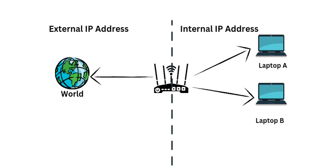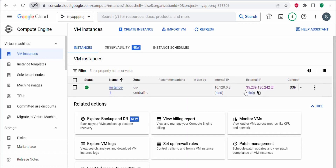To sum up, the main difference between internal and external IP addresses is that internal IP addresses are used for communication within the VPC network, while external IP addresses are used for communication with resources outside the VPC network. Internal IP addresses are not visible on the internet, while external IP addresses are visible. Whenever you stop a VM instance, the external IP address gets changed and a new one gets assigned.